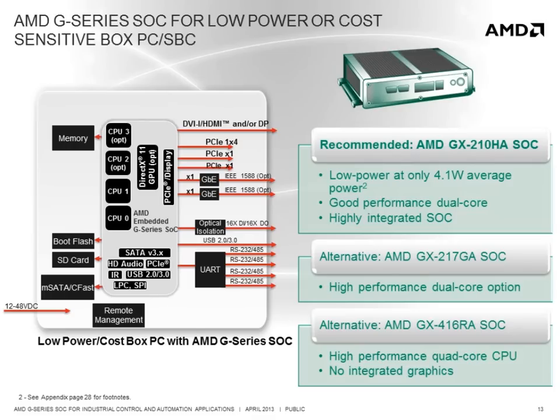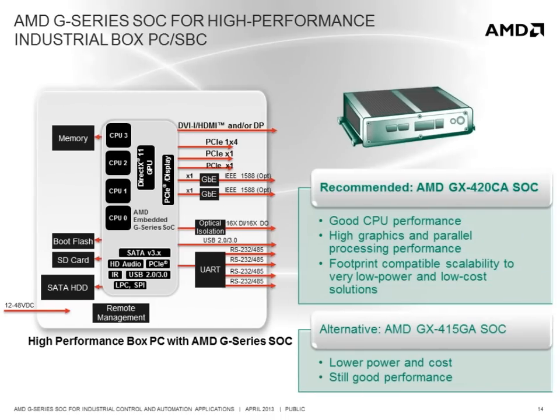For applications that require very high CPU performance but do not require graphics, the GX416RA is available as a cost-effective quad-core alternative. For high-performance box PC applications, one of the benefits of the G-Series SOC family is its ability to scale up to very high graphics performance and good quad-core CPU performance with the GX420CA.